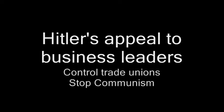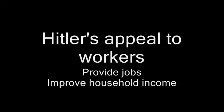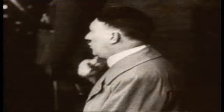To business leaders, for example, Hitler promised to control trade unions and to deal with the communists. His promise to remove the communist threat also appealed to farmers who were concerned by the collectivisation policies in Stalin's USSR. Meanwhile, to workers, the traditional supporters of communism, Hitler promised that he would provide them with jobs and to address the dramatic fall in incomes that had seen the average German who still had a job earn 40% less than they had in 1929. But to all groups, Hitler said that he would get rid of the Treaty of Versailles, which had treated Germany so poorly in the aftermath of the First World War.